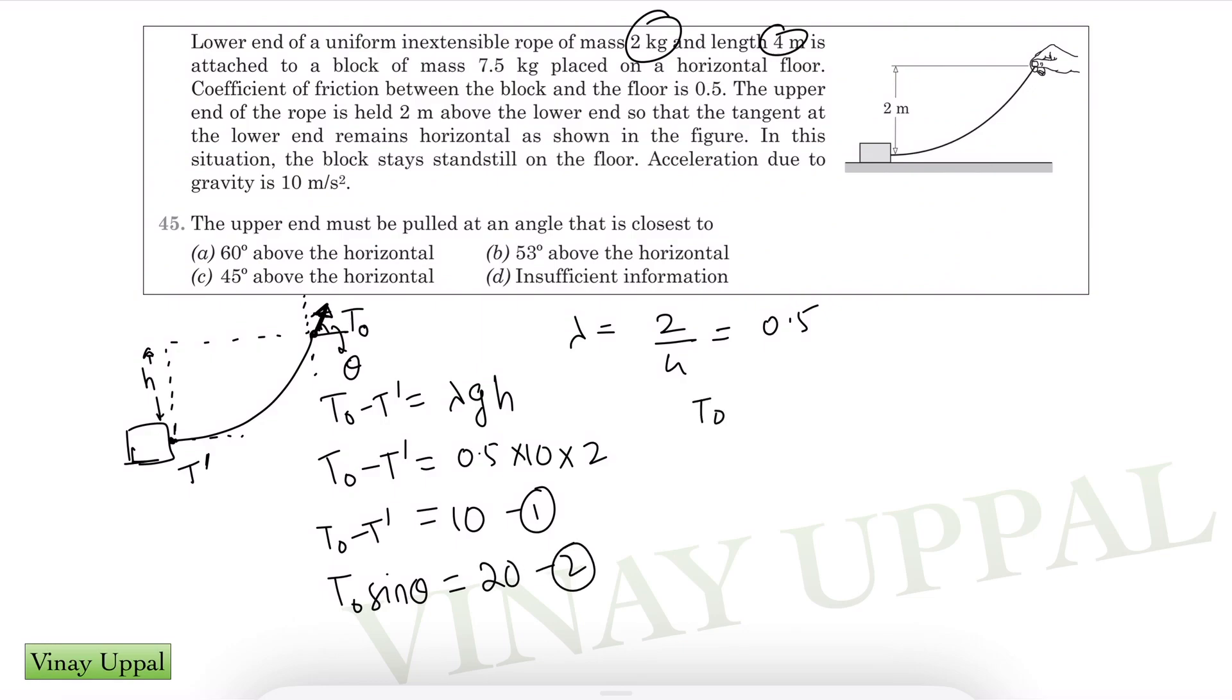And the third equation would be that the horizontal component of tension should be equal for horizontal equilibrium of the rope. So T0 cos theta should be equal to T dash. Just substituting T dash in the first equation, I'll have T0 into 1 minus cos theta equals 10, and I also have the second equation T0 sin theta is 20.